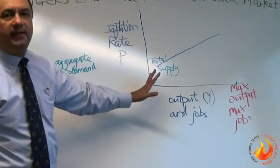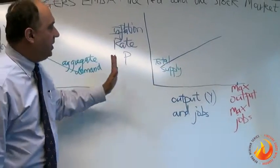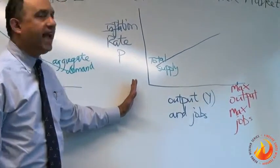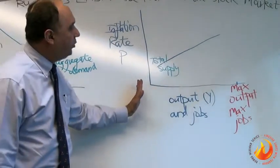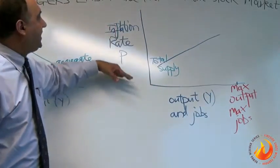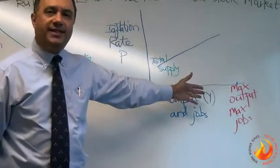Let's start with some basic economics here. Most of you have seen this before. On this axis, we have output and jobs - low output to maximum output, low jobs to maximum jobs. On this axis, we have the inflation rate, P. So P is inflation, Y is output.